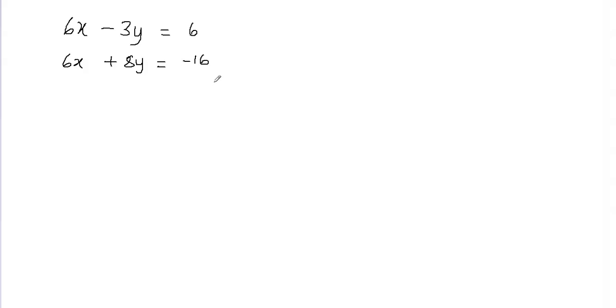In the elimination method, you either add or subtract the equations to eliminate one of the variables. You eliminate one variable and solve for the other.